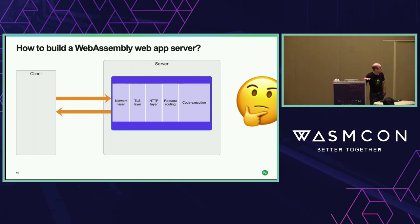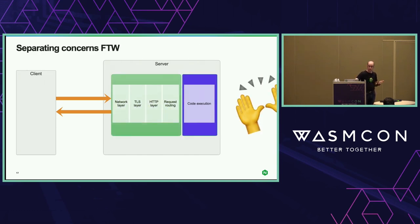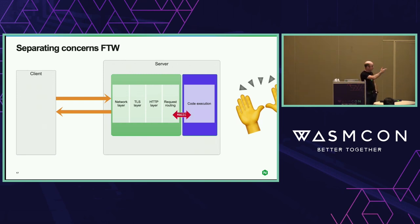The group I work in at NGINX saw this and thought you just have to do this — it's going to be an amazing plugin model for extending the NGINX proxy we already have, and it's going to change what things look like at the runtime. We just need: network layer, TLS layer, HTTP parsing, request routing, and code execution. Code execution is the only thing we really care about here — everything else is a solved problem. Let's separate the concerns and minimize the application code to the sandbox — the WebAssembly runtime.